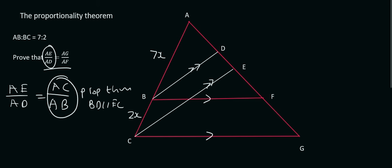So we can say that AC over AB is going to be the same as, well AC is the entire length. And so we'll have to use the entire length on the other side. So that's going to be AG over AB is from there to there. So that's going to be the same as AF, and that's going to be prop theorem.